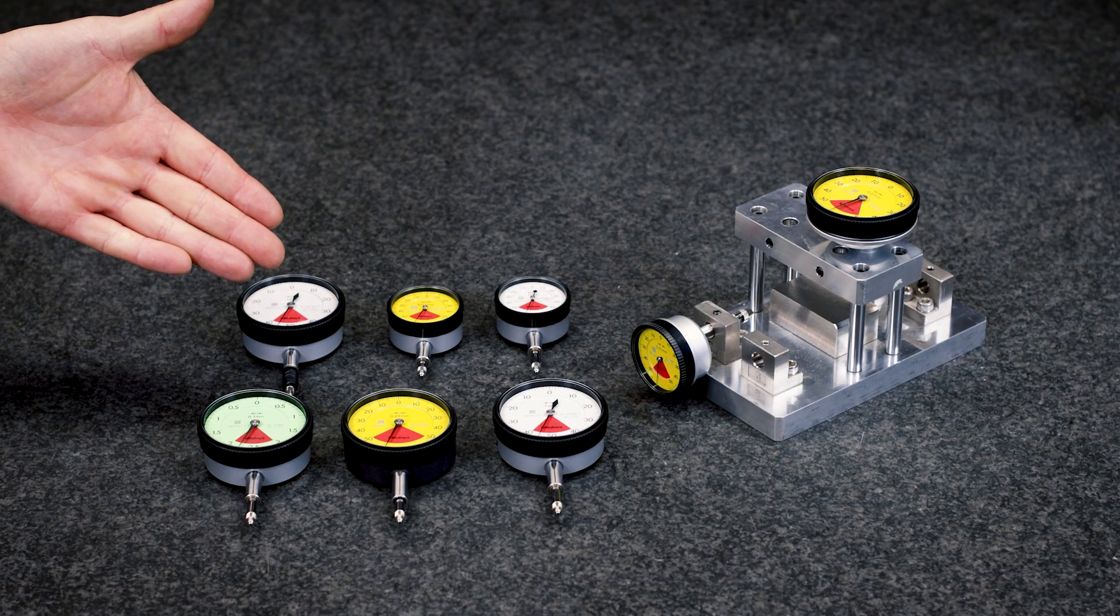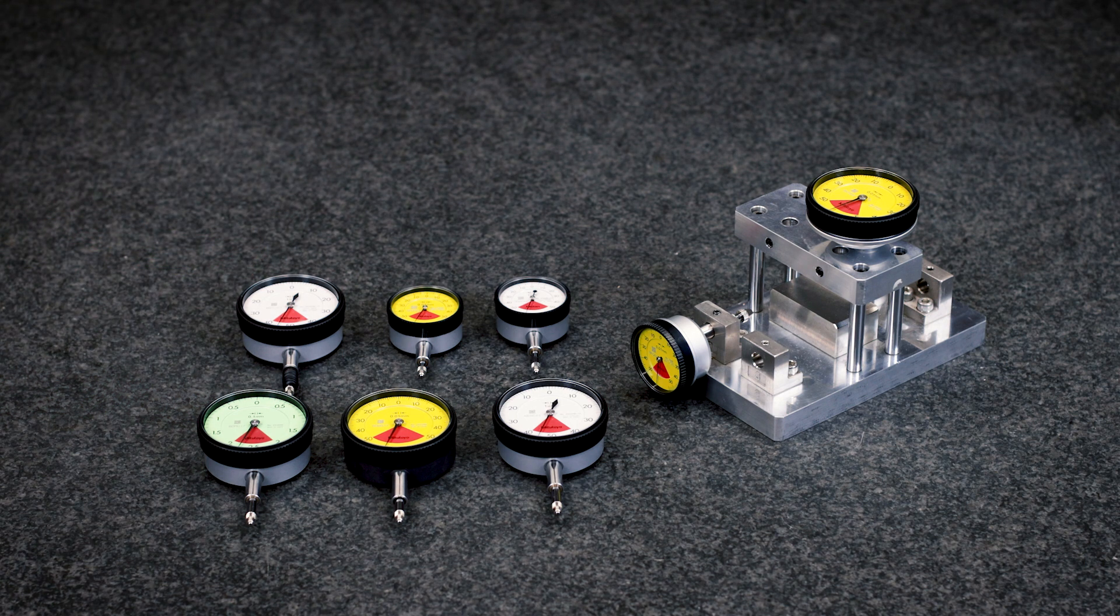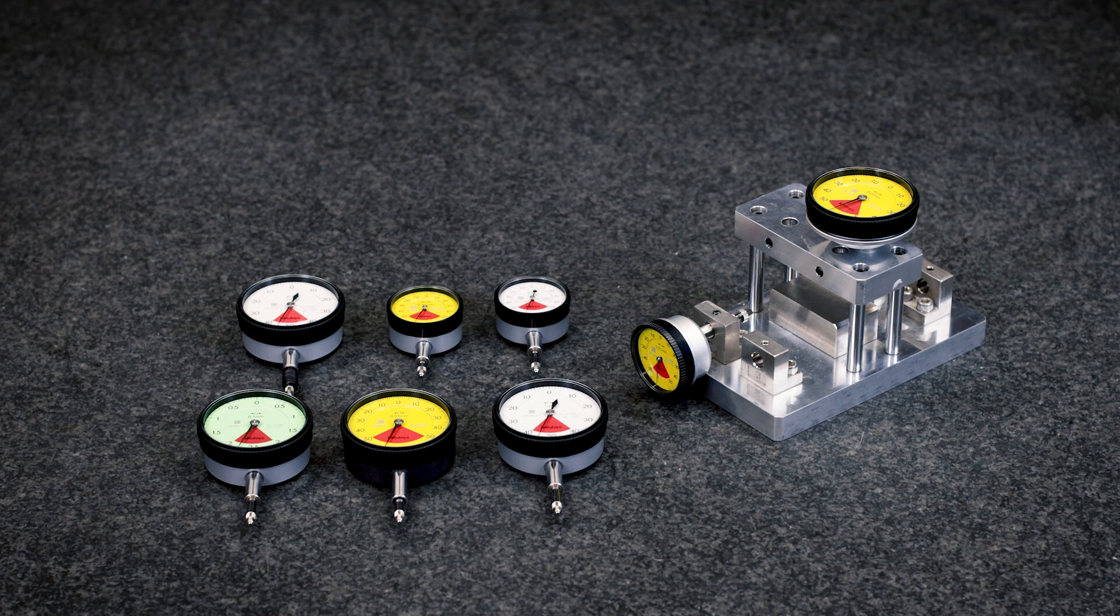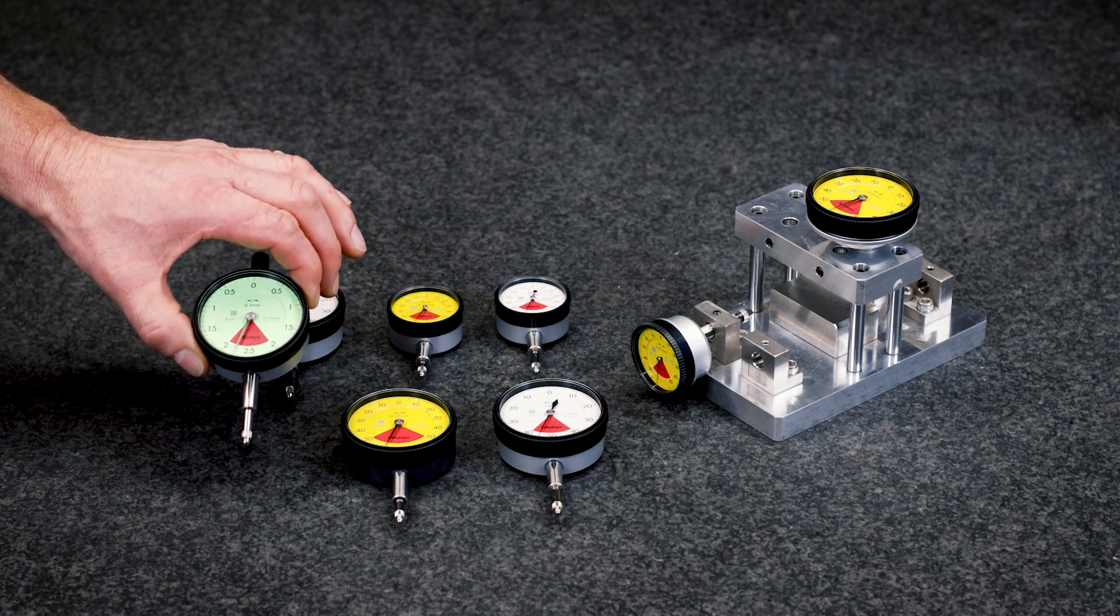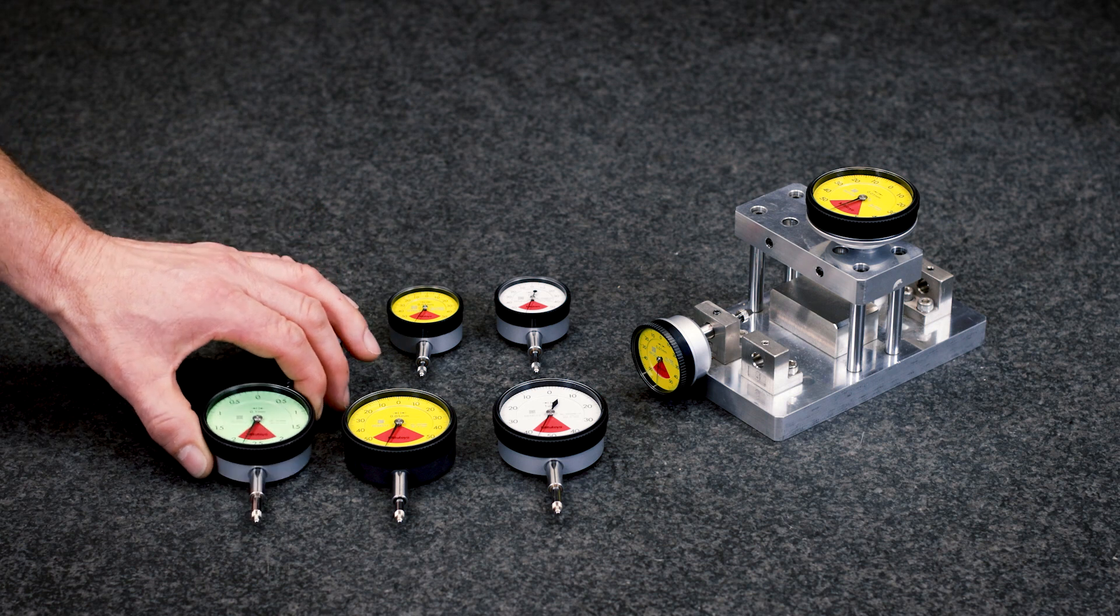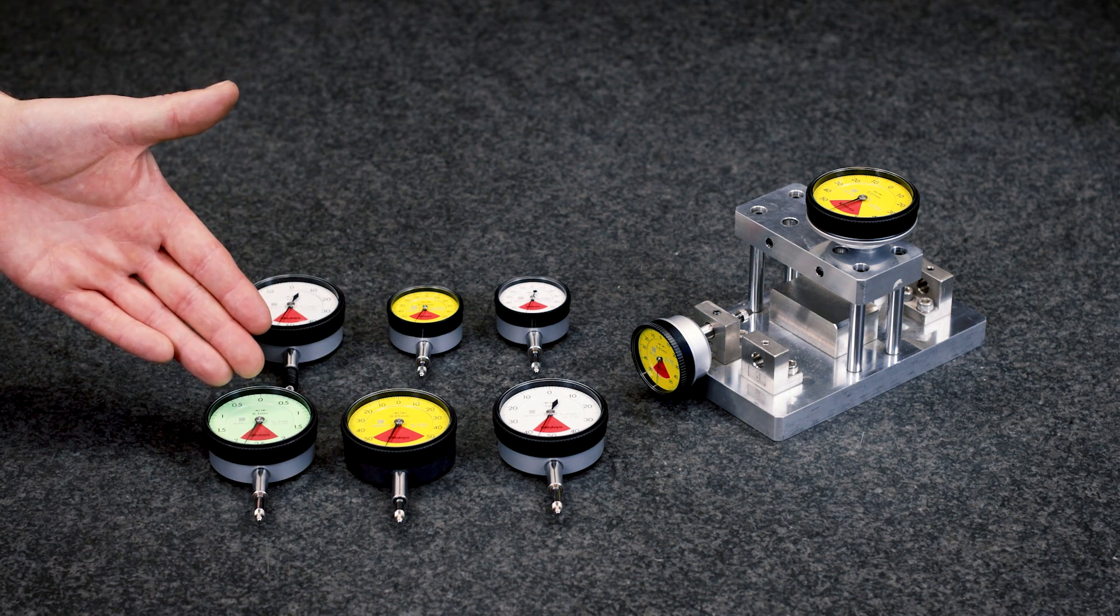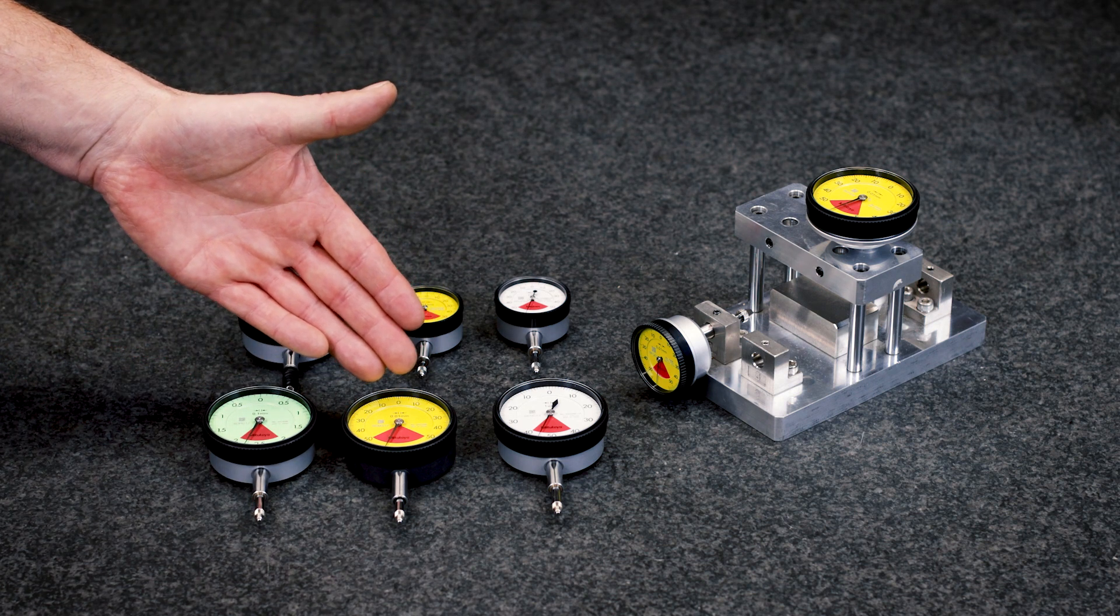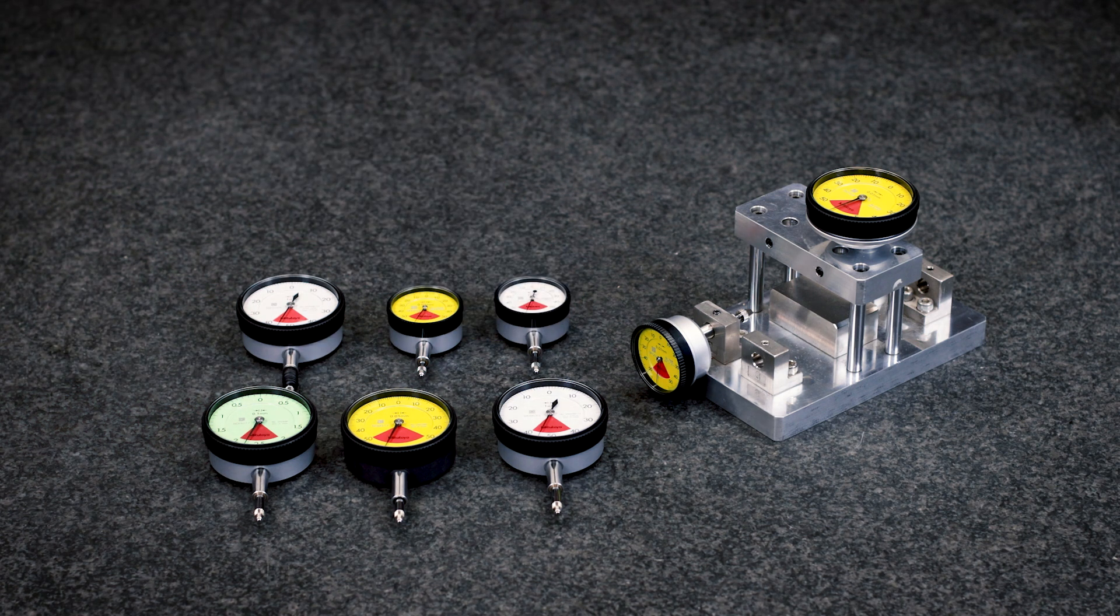Here you can see some different designs of 1-revolution dial indicators Mitutoyo is able to provide. Usually, a bezel diameter of 57 mm is common to use. We offer 100 µm, 10 µm and 1 µm scale interval.